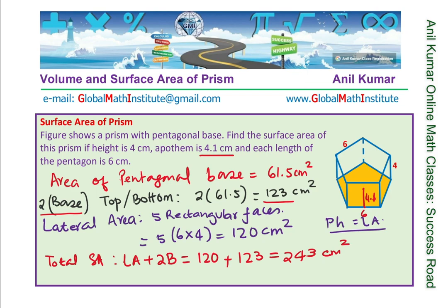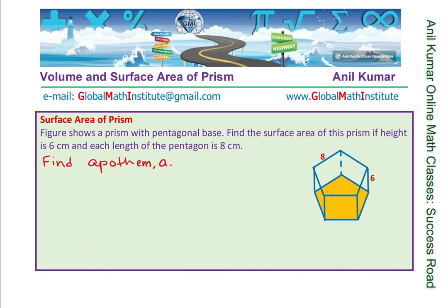That is how we calculate the surface area of this prism which has a pentagon as the base. This was a relatively simple question since all dimensions required to find the volume and surface area were provided. Now let's take the second question, where the apothem is missing. We have each side as 8 and height as 6 cm, but the apothem is not given. How do we find the apothem?